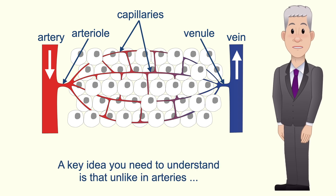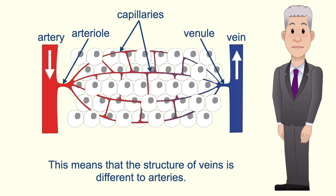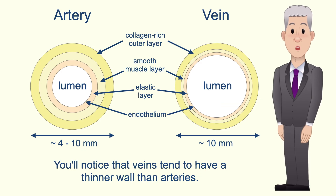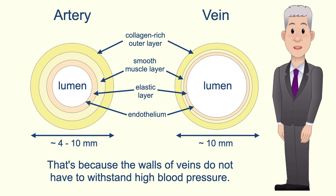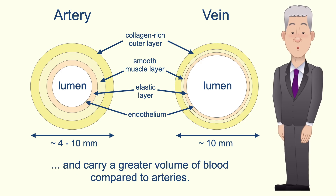A key idea you need to understand is that unlike in arteries, the blood in venules and veins is under low pressure and is not traveling in pulses, and this means that the structure of veins is different to arteries. Veins tend to have a thinner wall than arteries because the walls of veins do not have to withstand high blood pressure. Veins also have a larger lumen and carry a greater volume of blood compared to arteries.